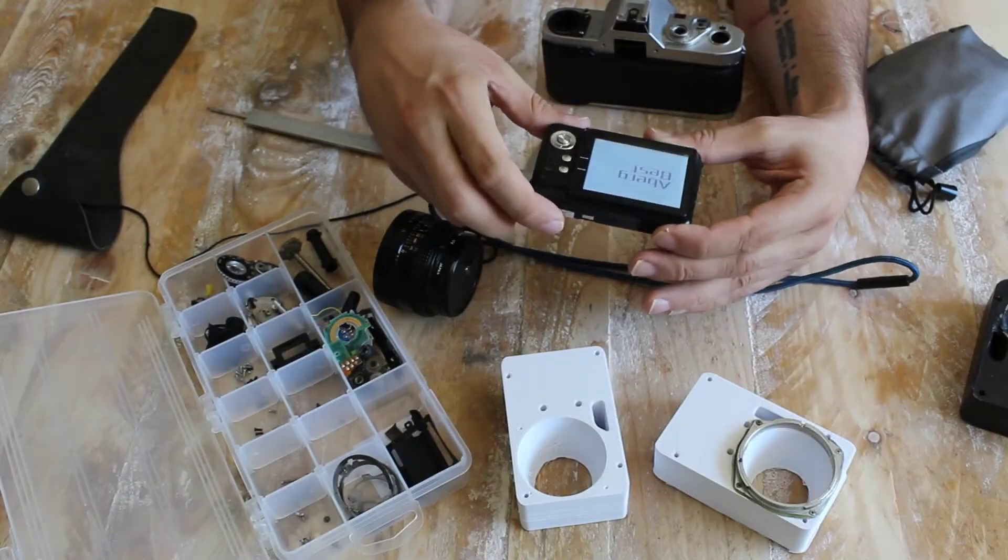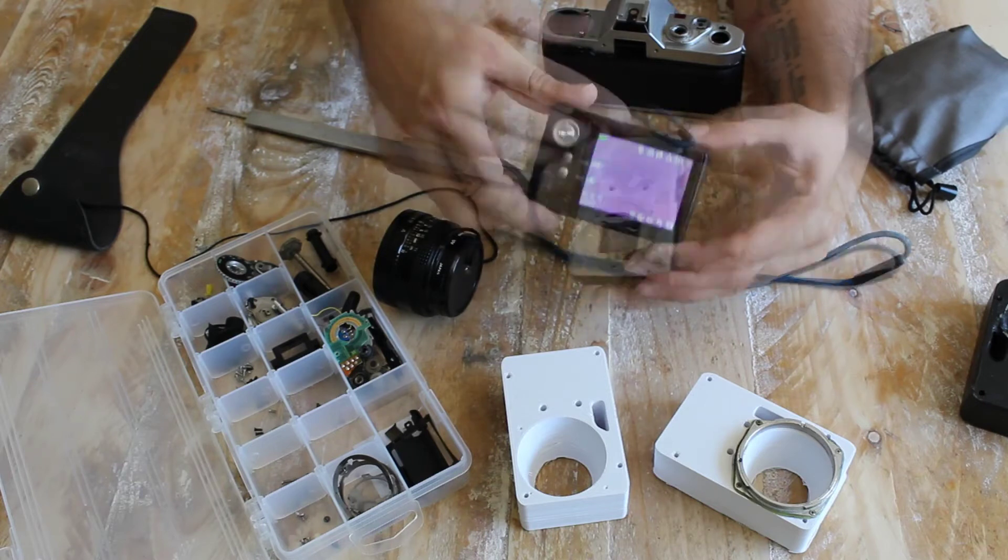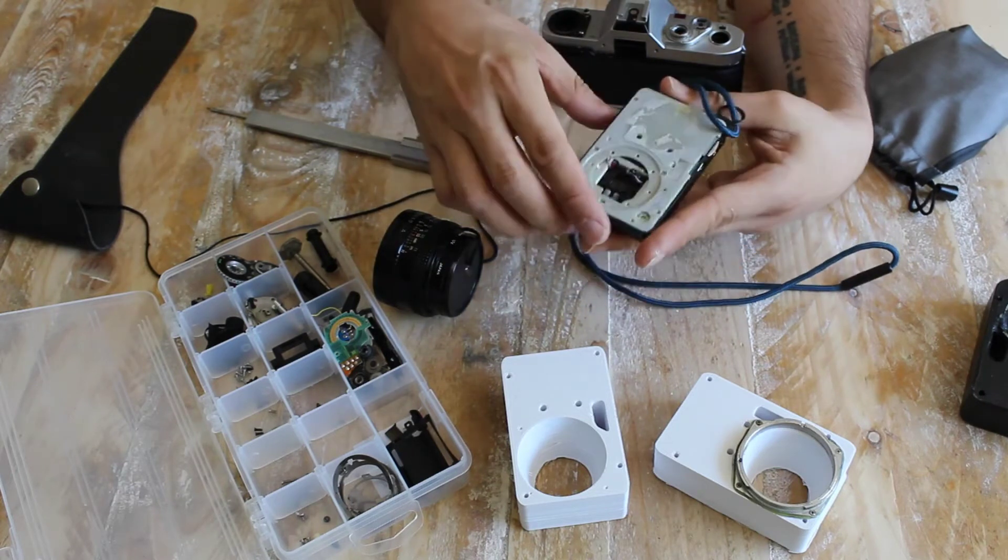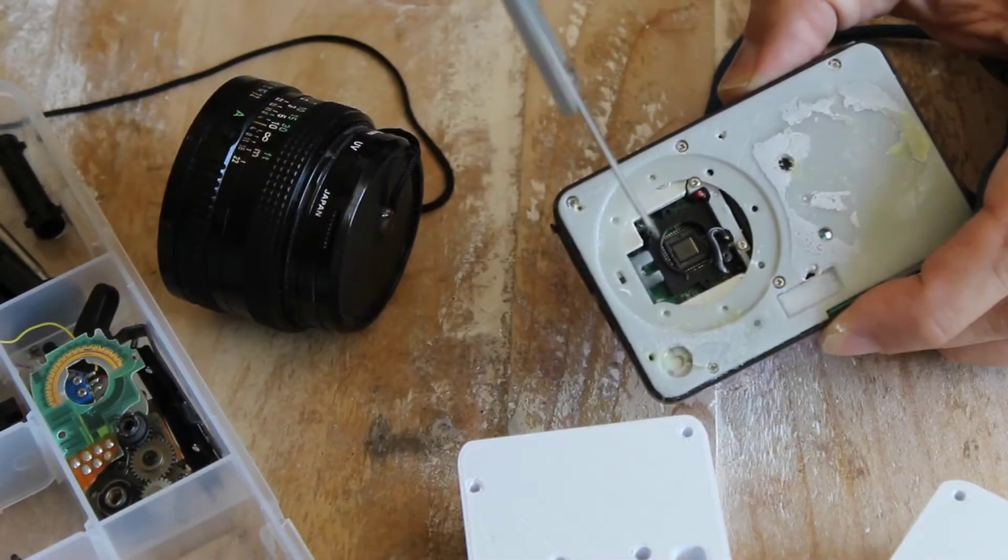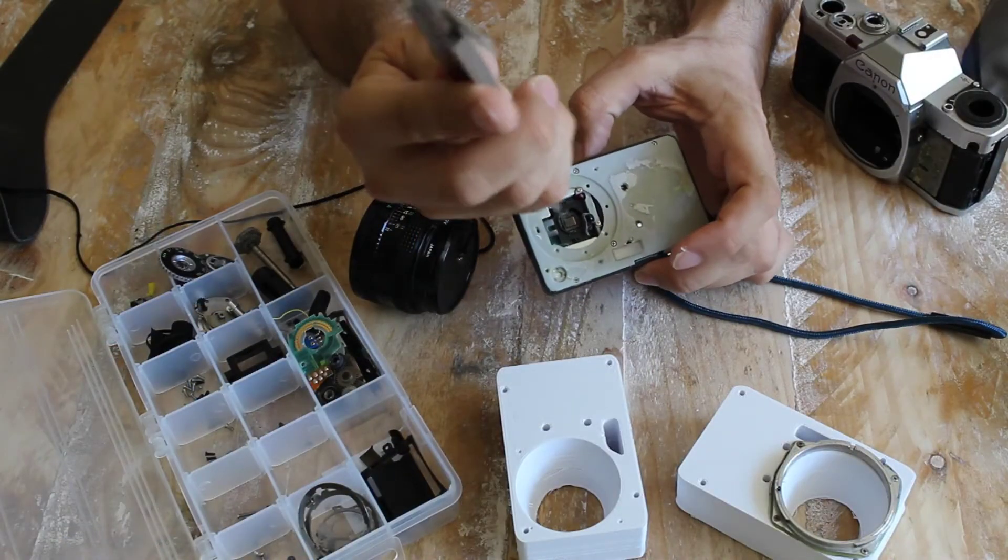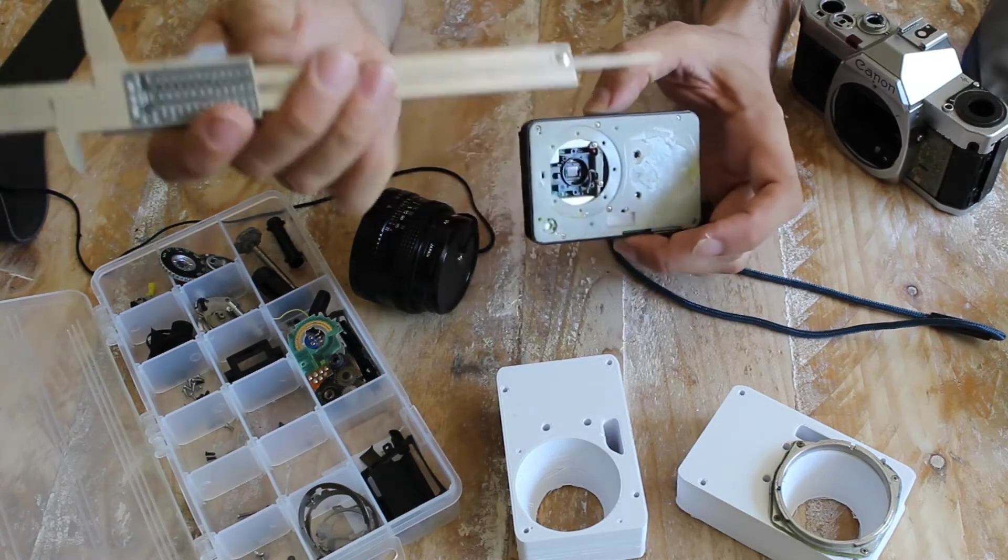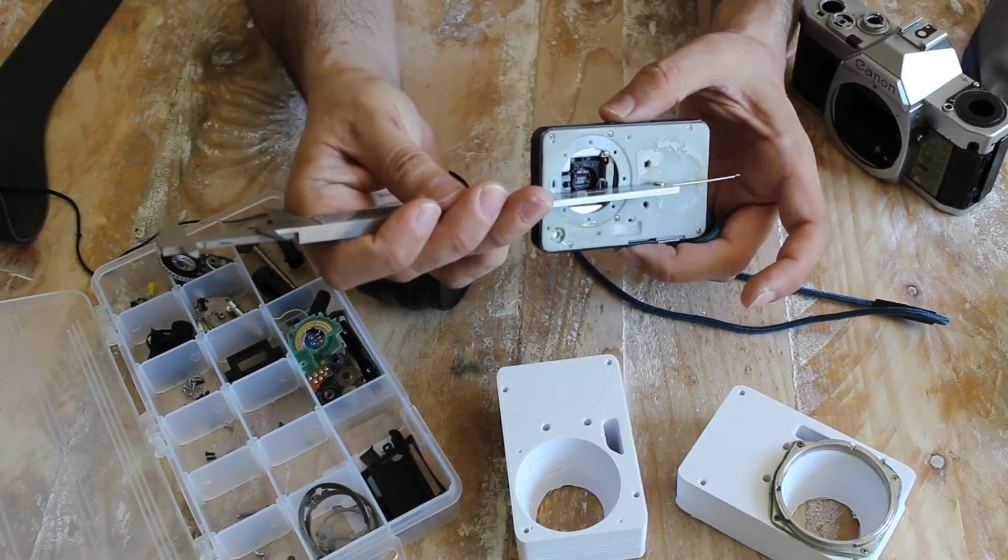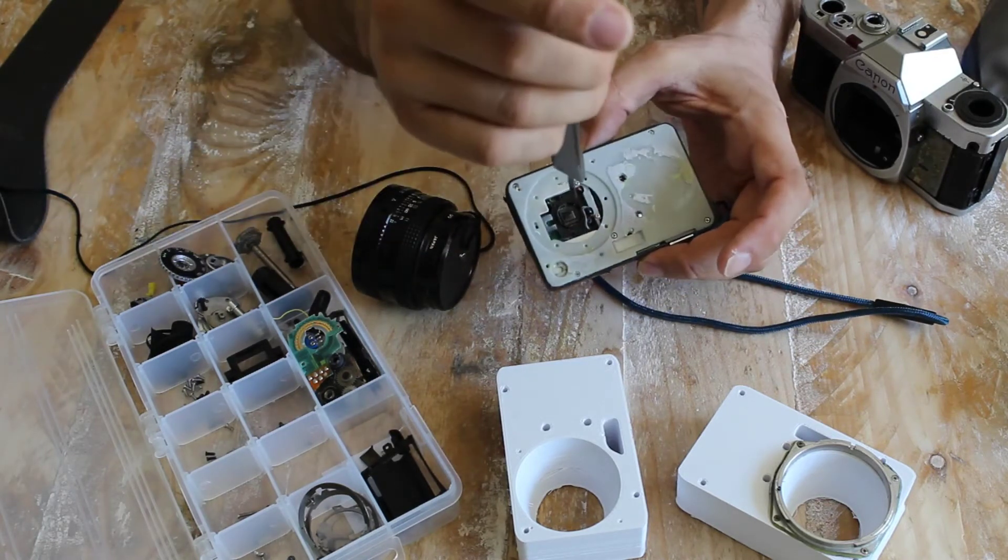For this experiment I bought a cheap camera I found on the internet and took off the cover of it. Here you can see the camera sensor. I measured the distance from the sensor to the surface, in this case it's 8 millimeters.